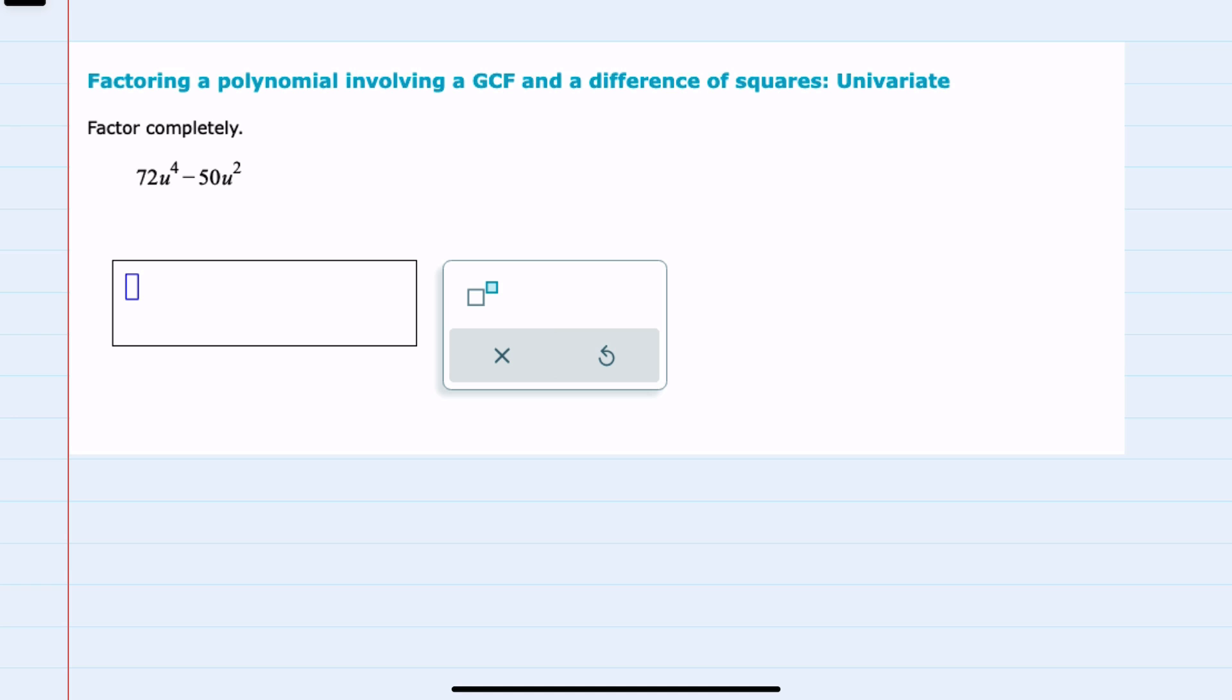We're asked here to factor completely, and as the title suggested, our first step is to look to see if there is a greatest common factor, something that I can factor out of each one of these two terms.